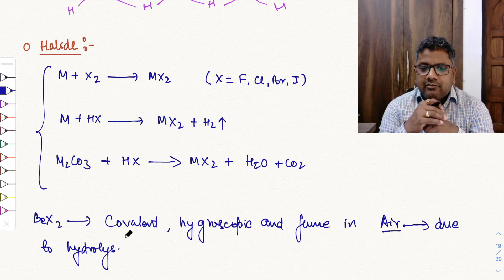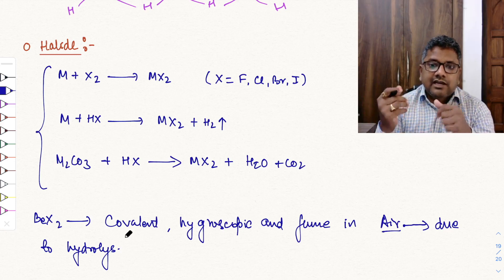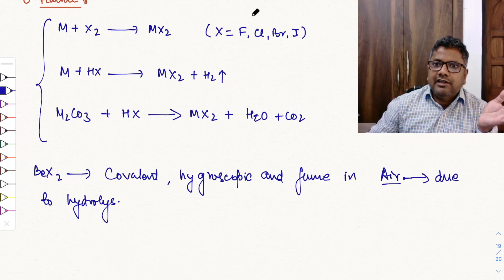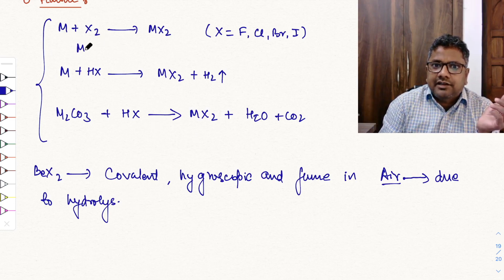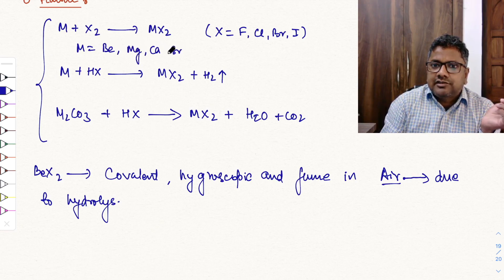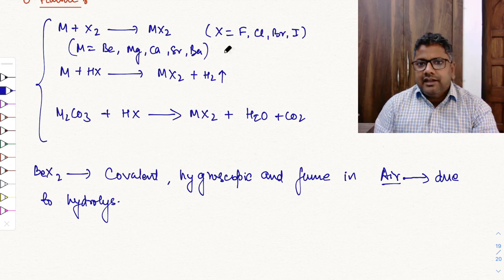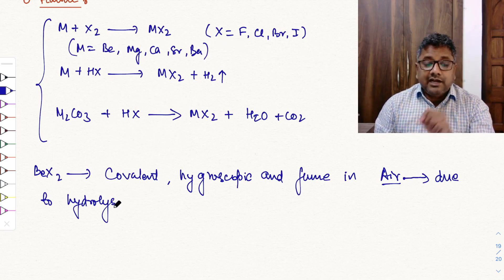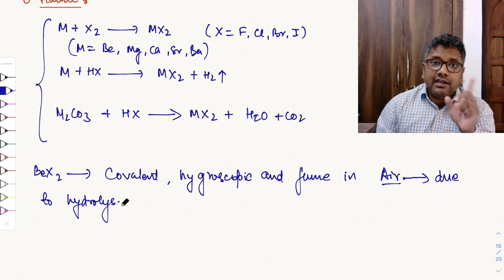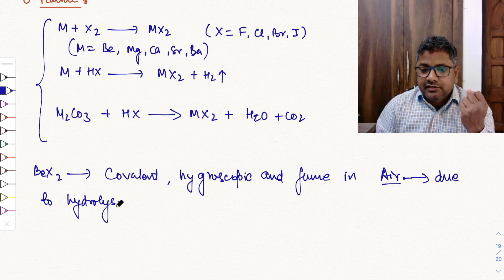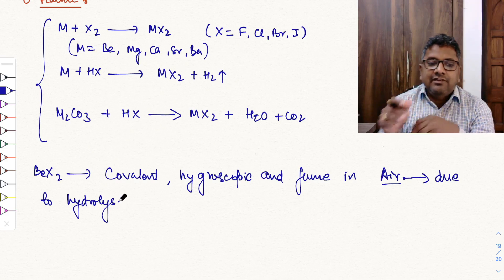Anhydrous beryllium halide cannot be obtained by any method involving aqueous reagents. Due to hydration, anhydrous BeX2 cannot be prepared by aqueous methods. For example, BeCl2 in aqueous medium exists as [Be(H2O)4]Cl2 — basically BeCl2·4H2O. Similarly, BeF2 exists as [Be(H2O)4]F2, i.e., BeF2·4H2O.